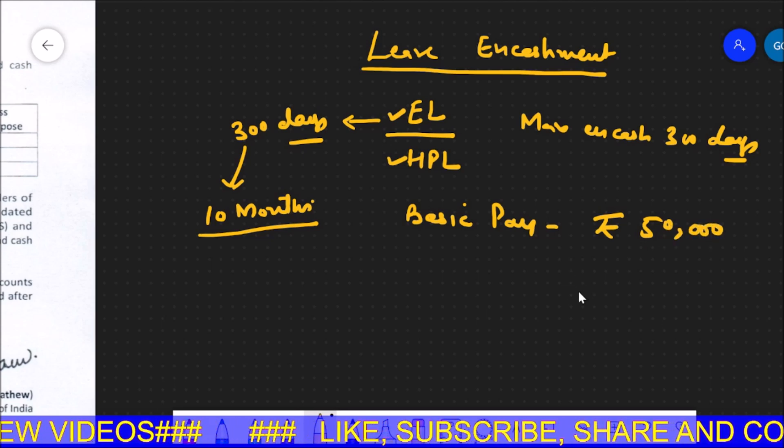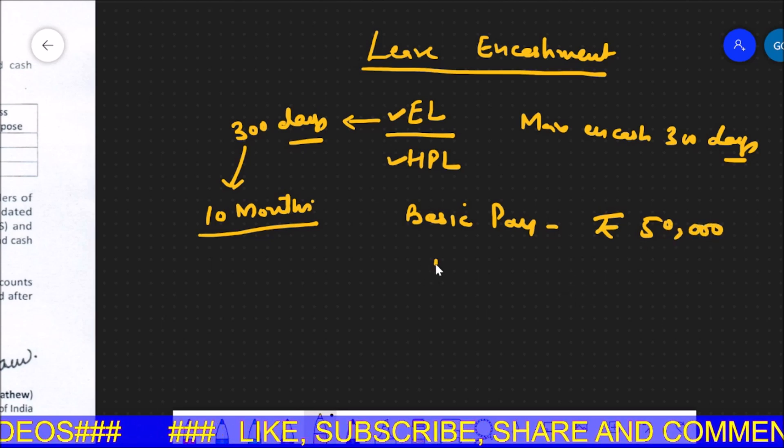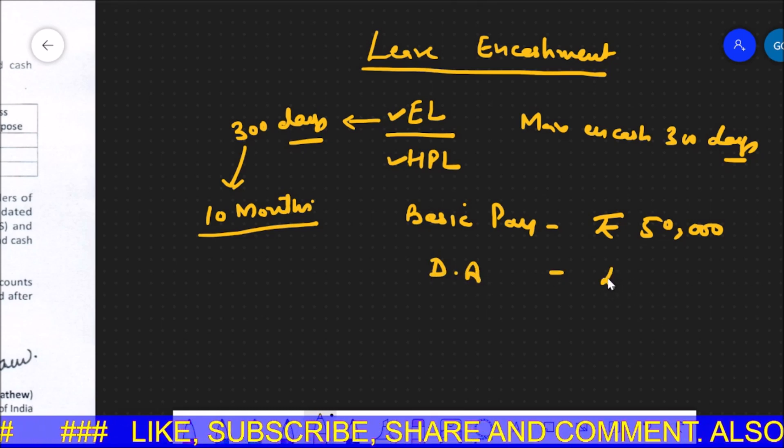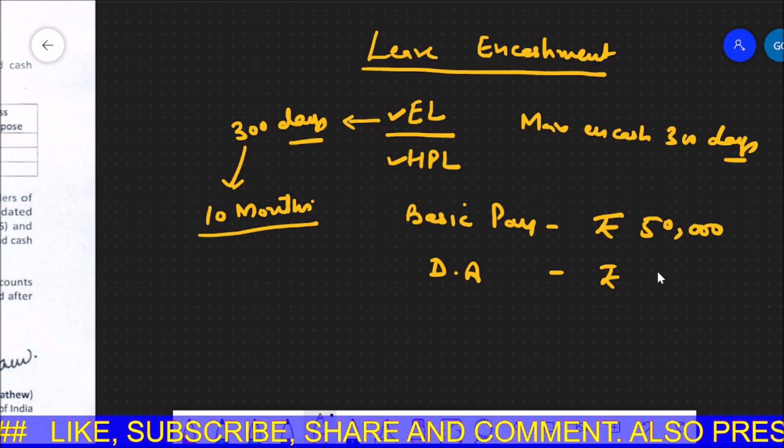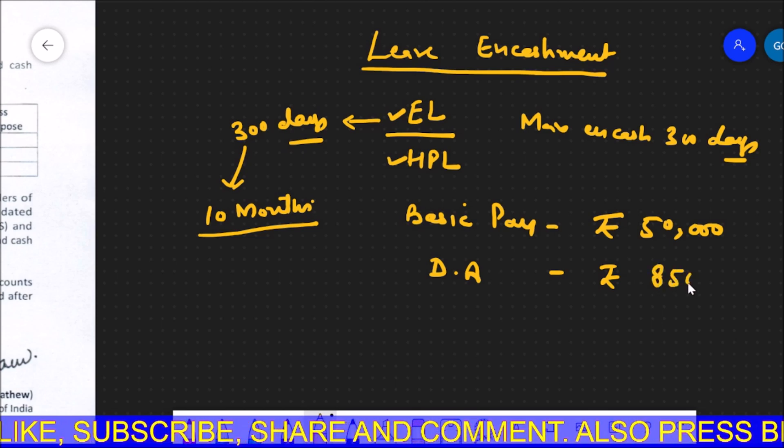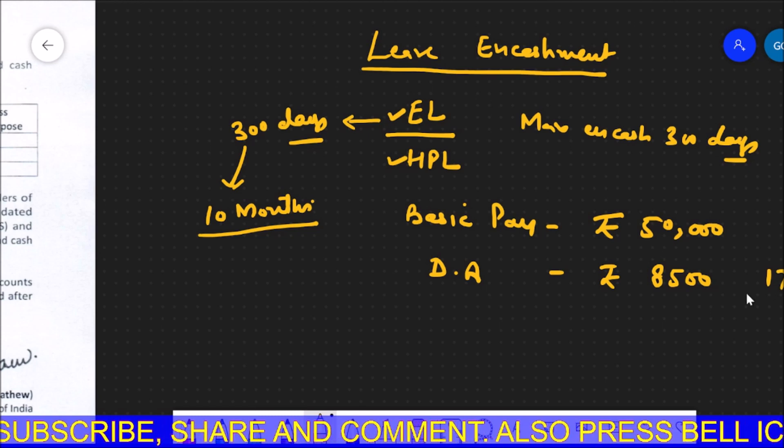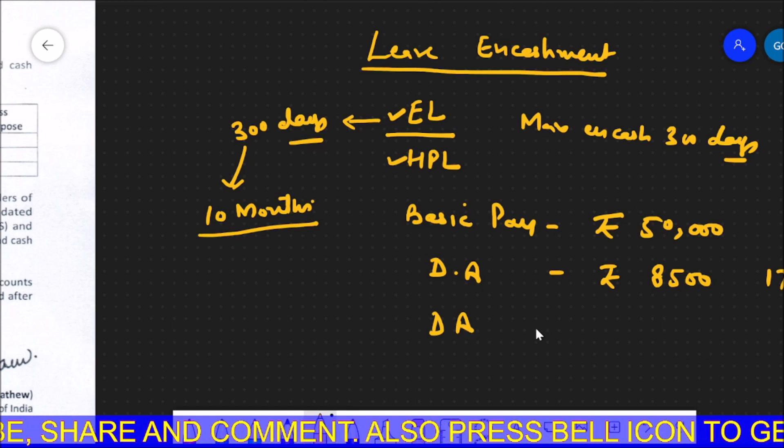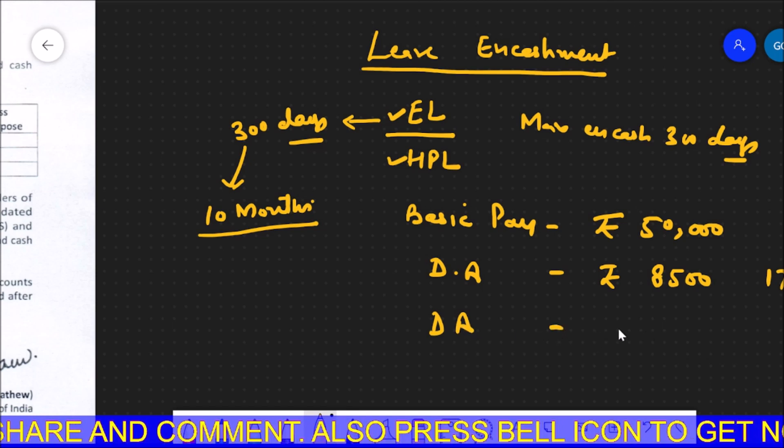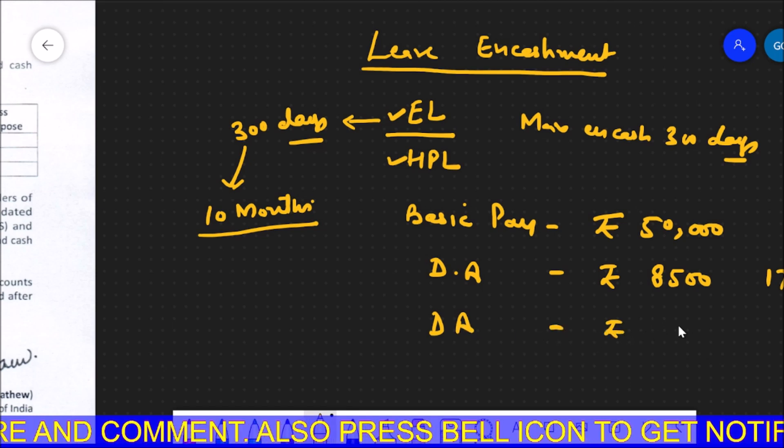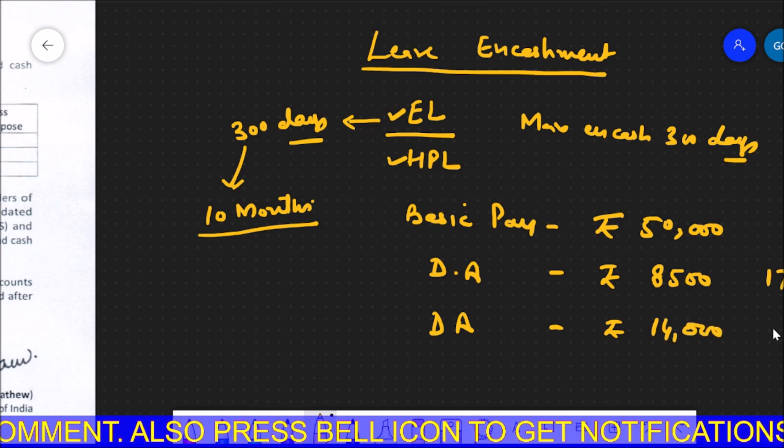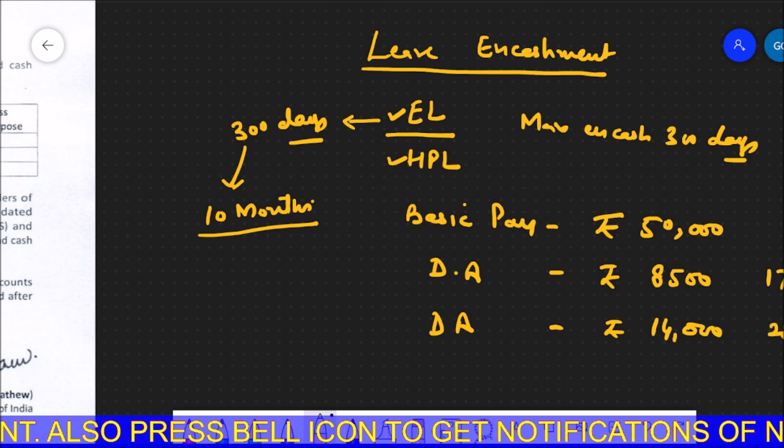So first, what was the old calculation? The old calculation was 17% DA which will become Rs. 8,500. And now what is the new calculation? The new calculation is 28% DA which will become Rs. 14,000.